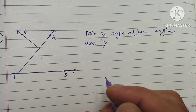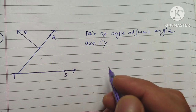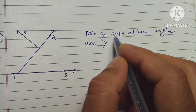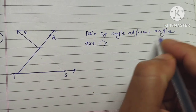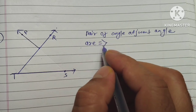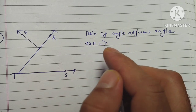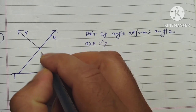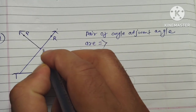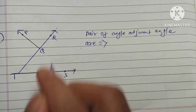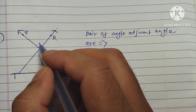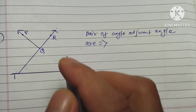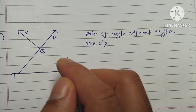In this figure, the pairs of adjacent angles are to be identified. Looking at the figure, we can see angle PQR and angle TQP.